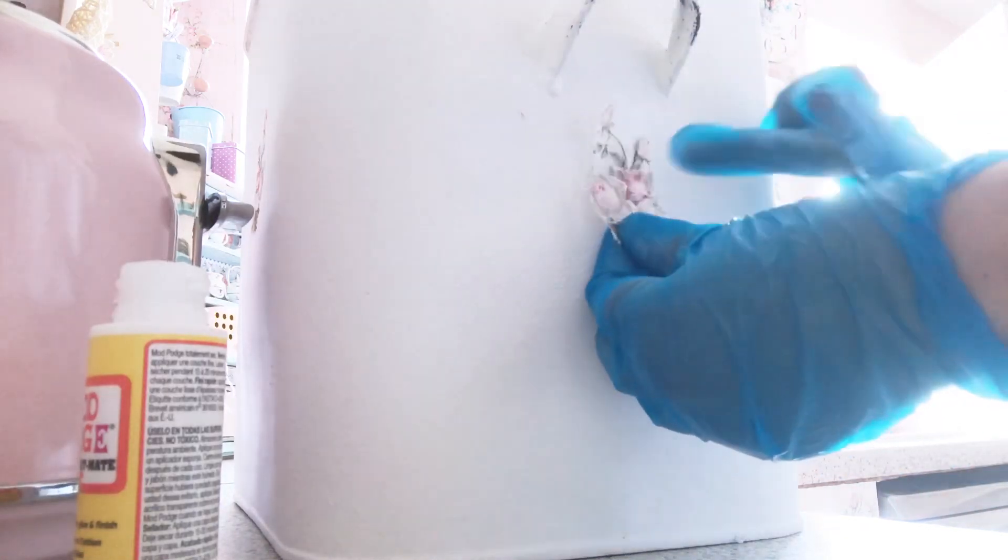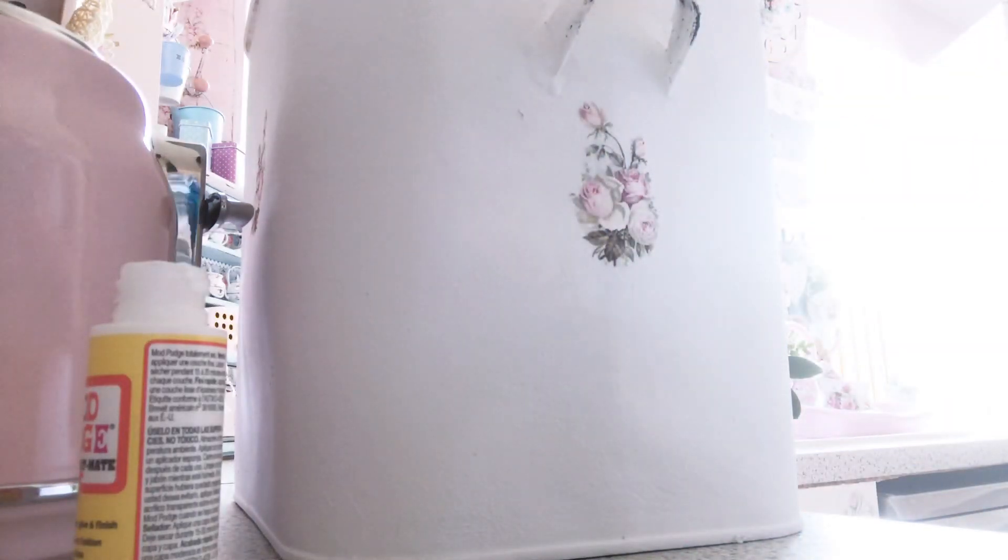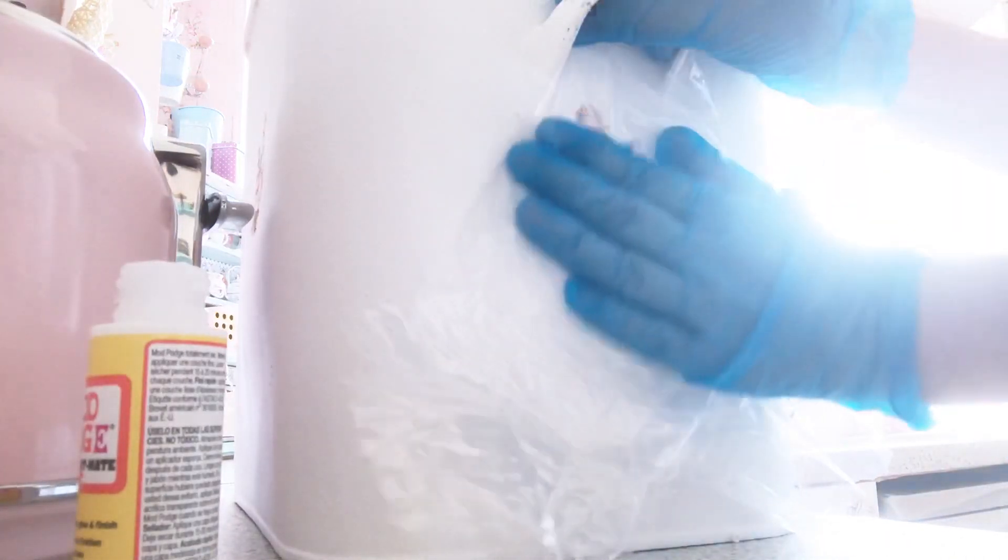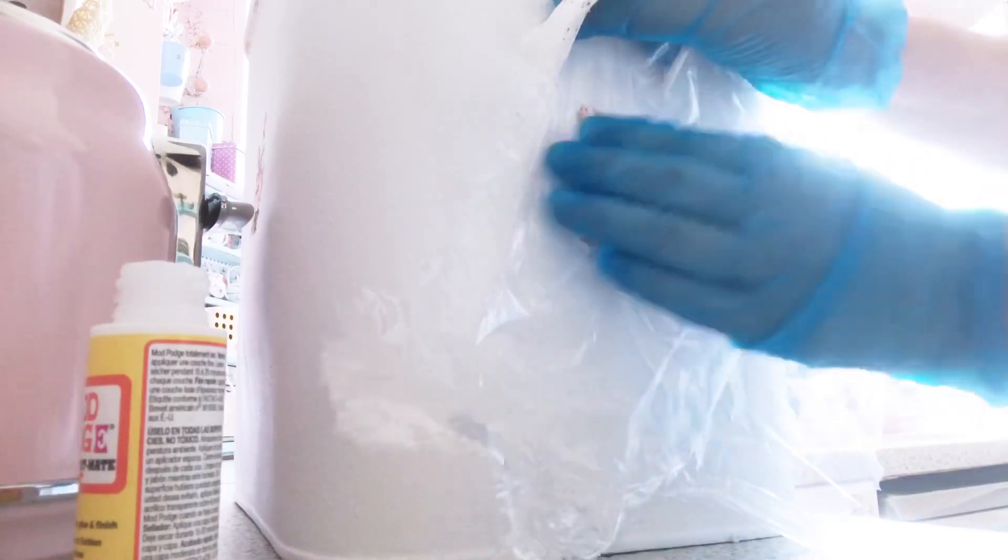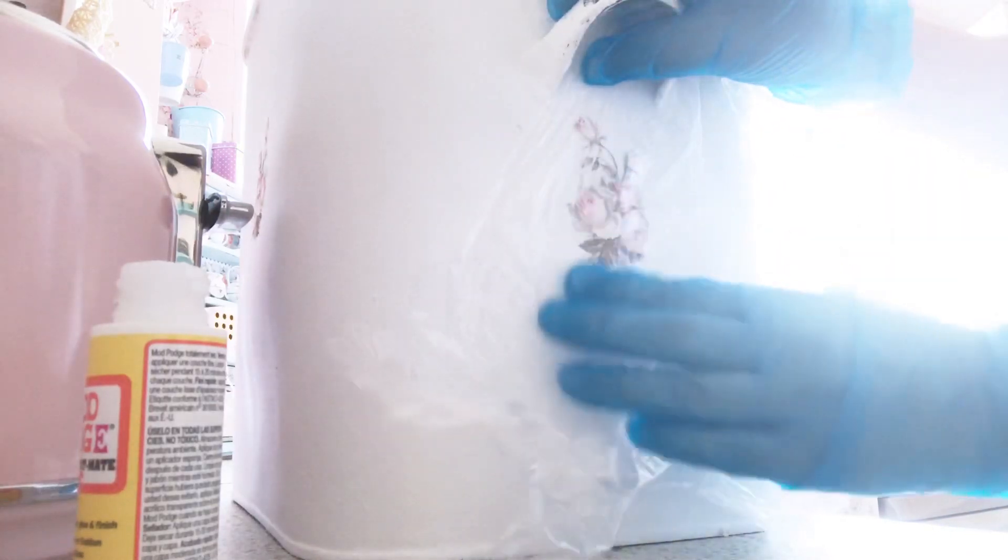Just apply it there where I put the Mod Podge. Then you get a piece of plastic and put it on top to smooth the decoupage and make it really lovely, because if it has wrinkles it doesn't look good. Just smooth it with your hands like that.